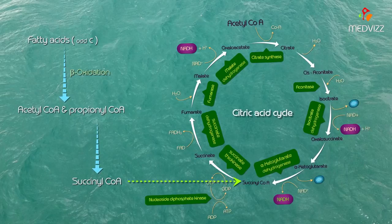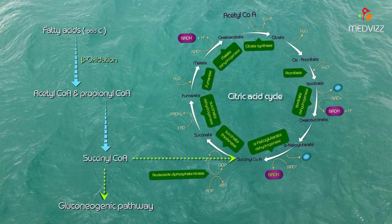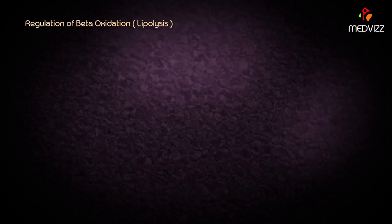Propionyl CoA gives rise to succinyl CoA, and succinyl CoA enters into the TCA cycle because it is an intermediate of the TCA cycle and may also enter into the gluconeogenetic pathway.